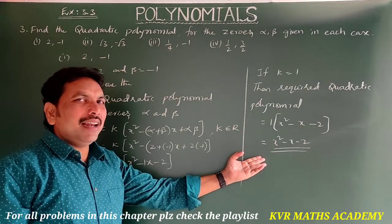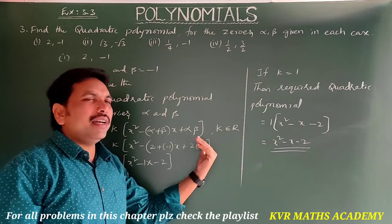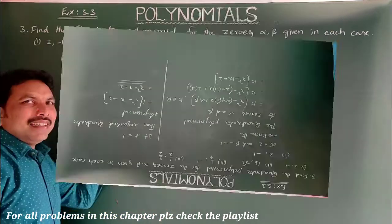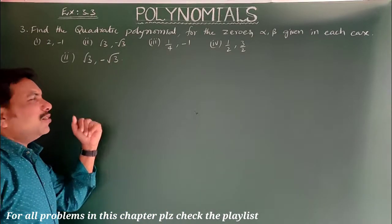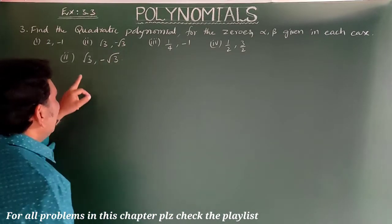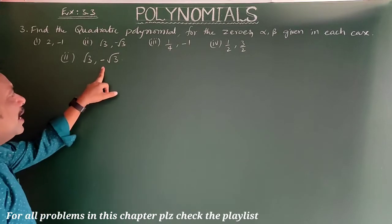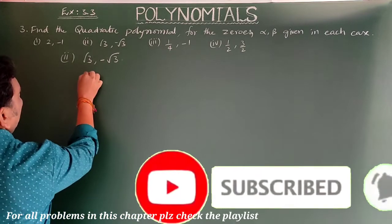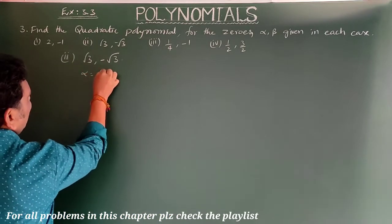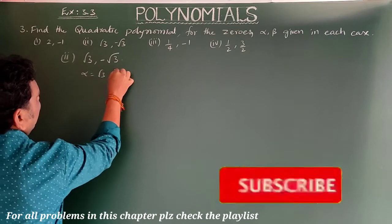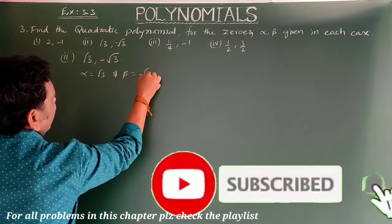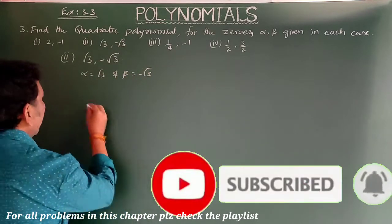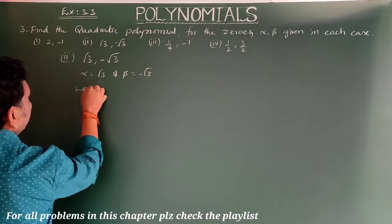Have you understood clearly? Yes, note it down. The second sub-part: √3 and -√3 are given, which means alpha = √3 and beta = -√3.